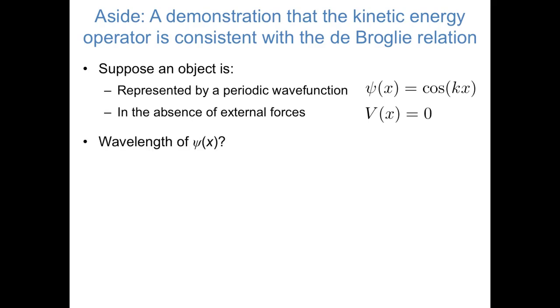Let's think about what the wavelength of this wave function would be. We know that a cosine function repeats itself every 2 pi, so we're looking for the value of x that causes kx to increase by 2 pi. That's going to be lambda, our wavelength, equals 2 pi over k.